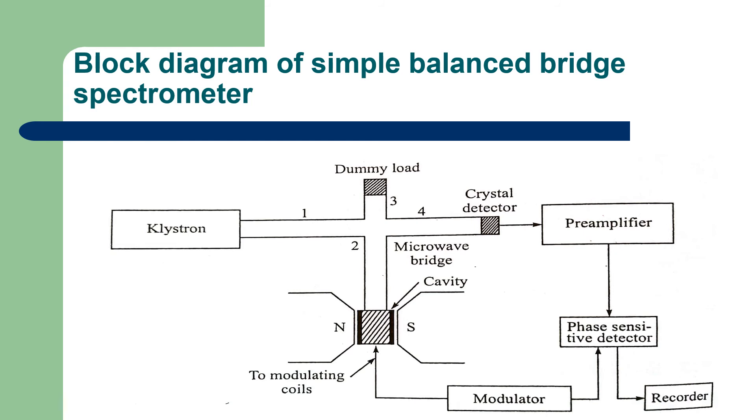Phase sensitive detector is used to detect ESR signal and represented as absorption or first derivative curves. The magnetic field is swept over a small range across the resonance condition by varying the current in a pair of sweep coils mounted on the cavity walls.